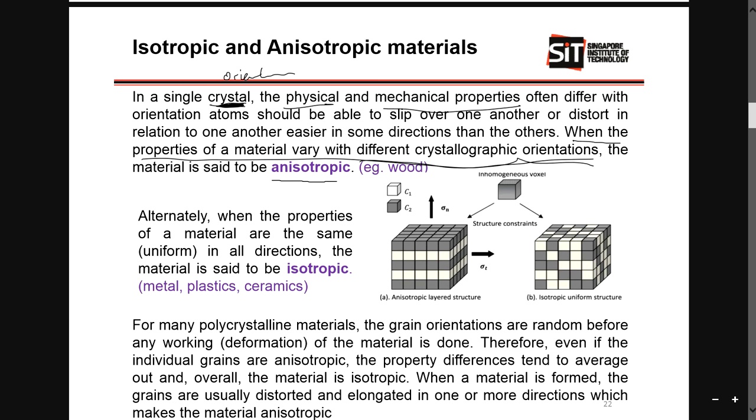...it is an anisotropic material. As you can see, it's an anisotropic layered structure. The black colored one is going in this direction, while the white colored one is actually in this direction, which is somewhat weaker.